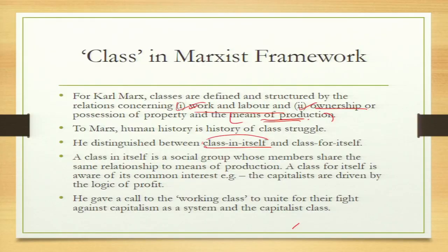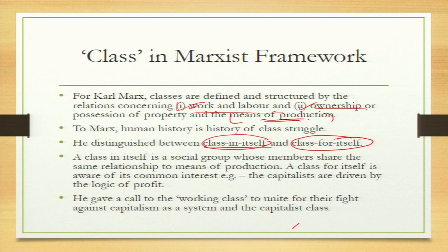Class struggle and class division are the two dominant ideas on which the entire Marxian political economy is based. Marx also talks about two more ideas: class in itself and class for itself. Class in itself is a group where the social group shares the same relationship to the means of production. Class for itself is aware of its common interest — for example, capitalists are driven by their logic of profit, so they are class in itself. Marx gave a call to the working class to unite for their fight against capitalism, which as a system needed to be abolished.